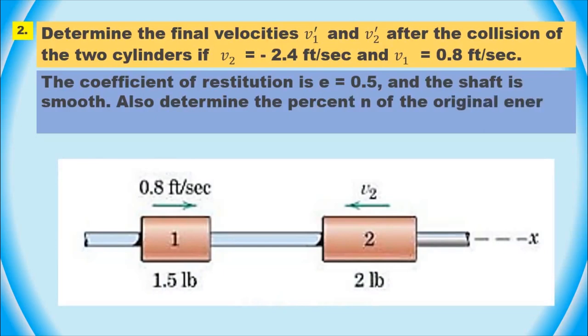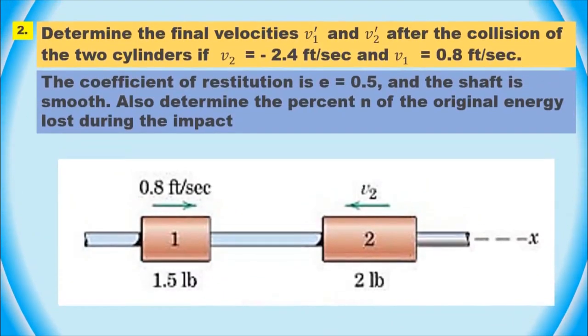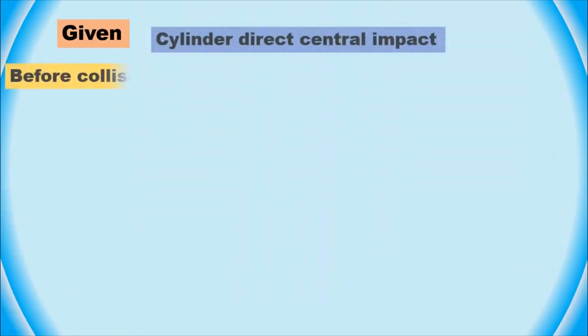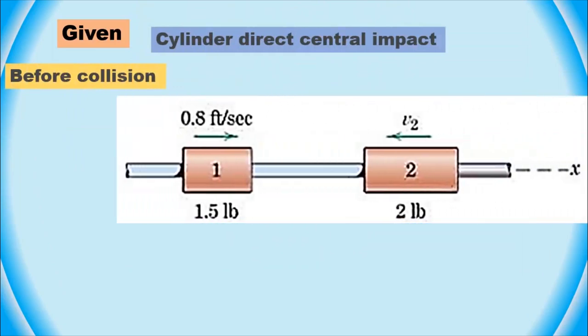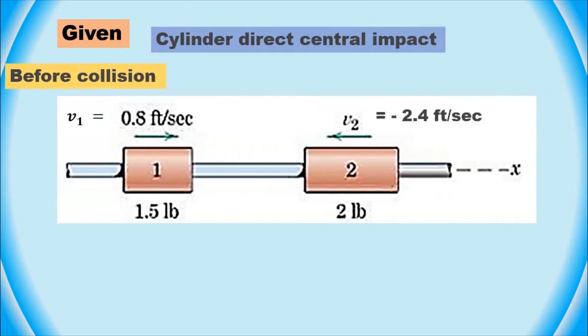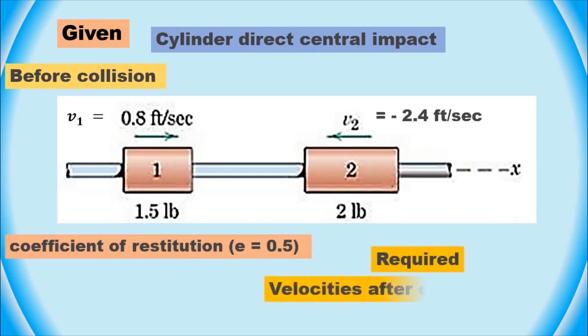In this problem, we have two cylinders labeled as cylinder 1 and cylinder 2. The mass of cylinder 1 is M1 equals 1.5 pounds and the mass of cylinder 2 is M2 equals 2 pounds. The initial velocity of cylinder 1 is V1 equals 0.8 feet per second and the initial velocity of cylinder 2 is V2 equals minus 2.4 feet per second. The coefficient of restitution is E equals 0.5 and the shaft is smooth.